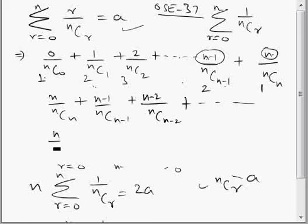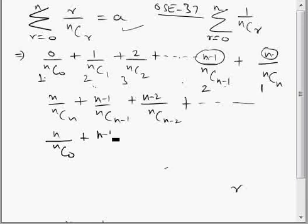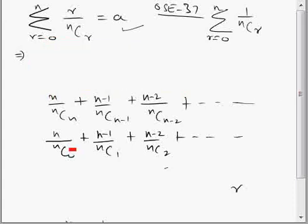Now I can write nCn as nC0, n-1 over nC1, n-2 over nC2, and so on. Now I will add this series, the given series, with this series.